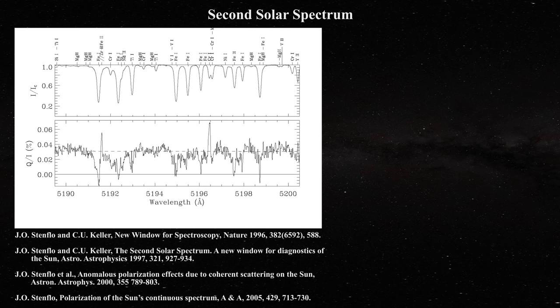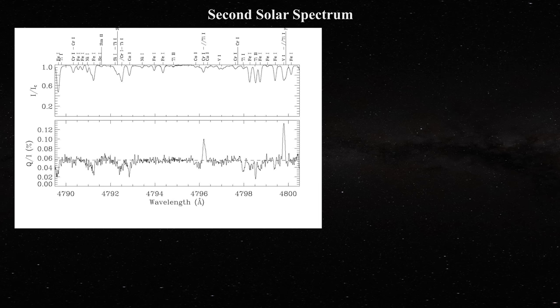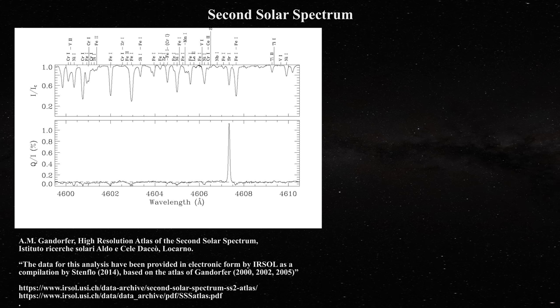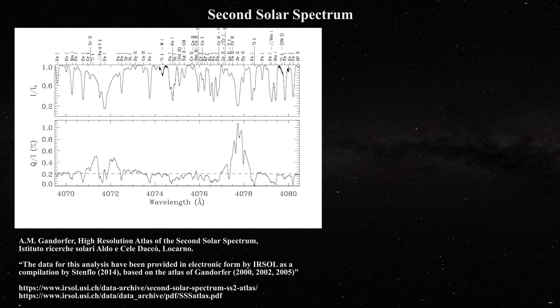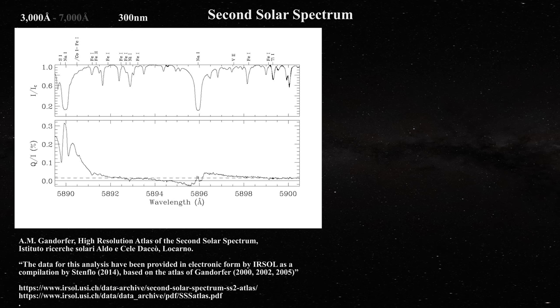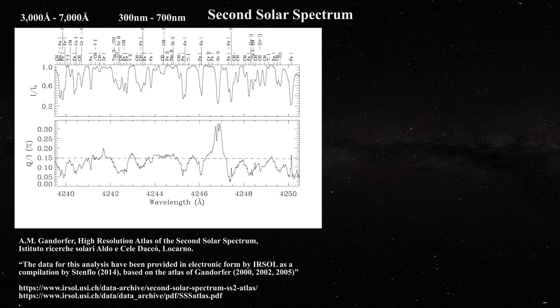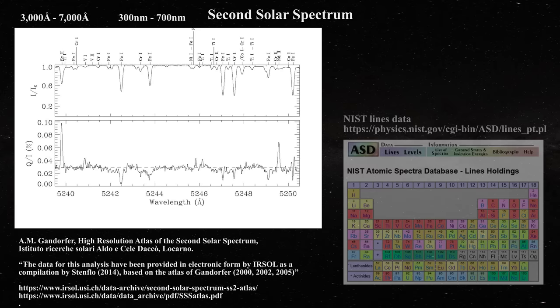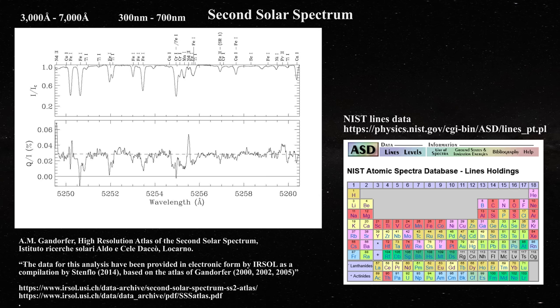Relative to the second solar spectrum, Professor Jan Stenflo has been a major force in this area and his papers are destined to become classics. These spectra are taken from the high-resolution atlas of the second solar spectrum, assembled by Akeem Gandorder. They are available online and a link is provided below. This database covers solar spectra from about 3,000 angstroms or 300 nanometers to about 7,000 angstroms or 700 nanometers. In order to understand the transitions involved, it is vital to have recourse to the publicly available data from the NIST, a link to which is also provided below.